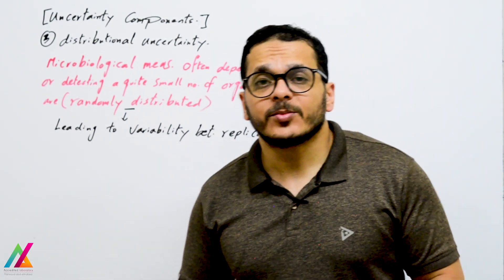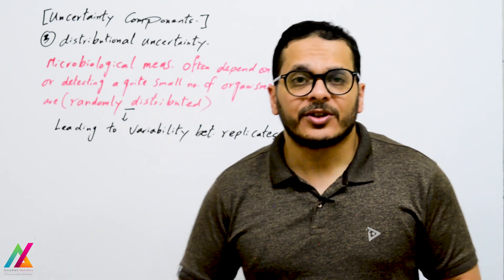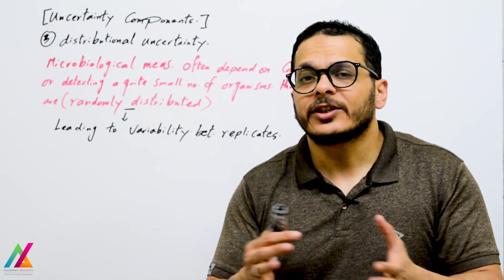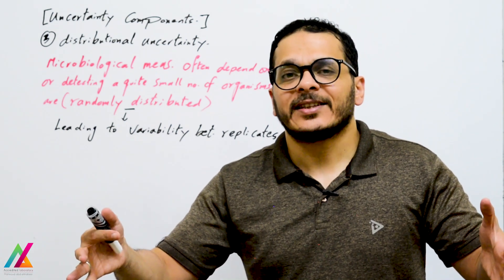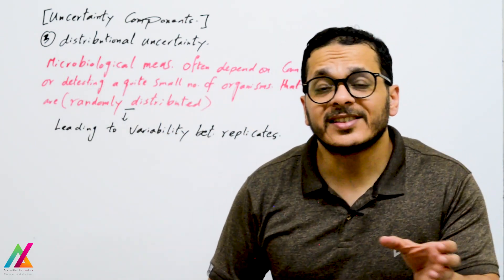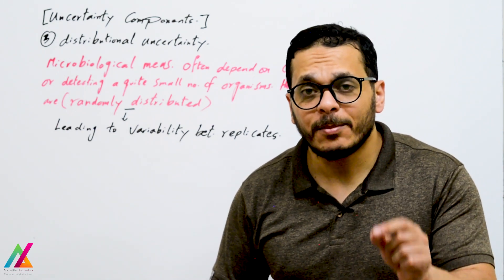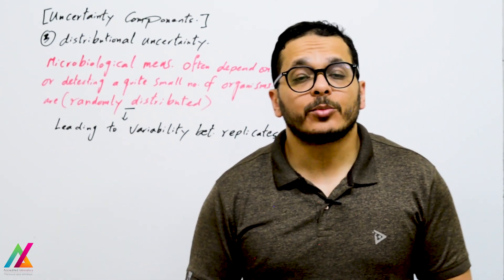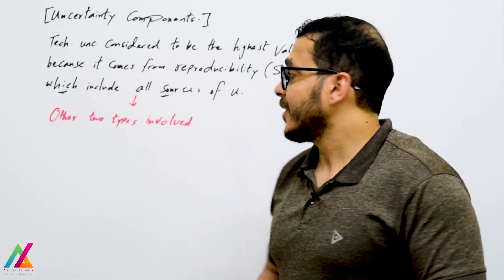Microbiological measurements often depend on counting or detecting a quite small number of organisms that are randomly distributed in the sample. This leads to variability between replicates, as test portions taken from the lab sample will not have the same number of microorganisms. This is called distributional uncertainty — due to the random distribution of microorganisms in the test sample, even for homogeneous material.